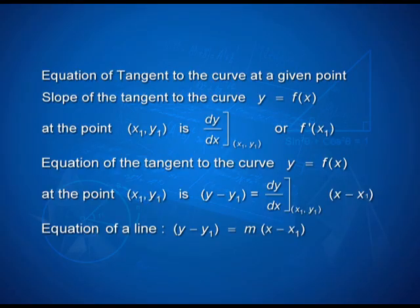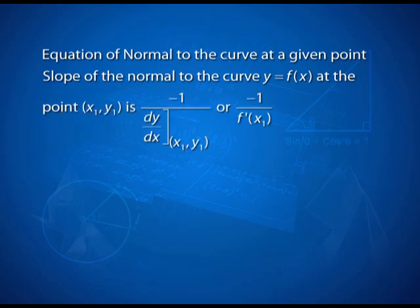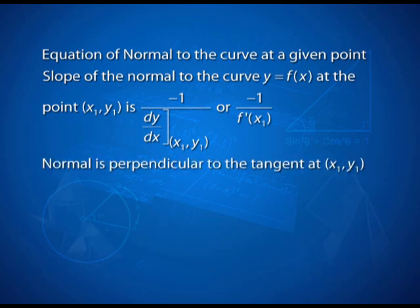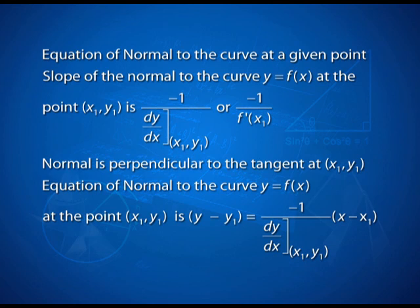Also, we have the equation of the normal to the curve at a given point. The slope of the normal at point (x₁, y₁) to the curve y = f(x) is given as −1 / (dy/dx)|_(x₁,y₁). Why? Because the normal is perpendicular to the tangent at the point of contact. Therefore, the equation of the normal to the curve is y − y₁ = [−1 / (dy/dx)|_(x₁,y₁)] · (x − x₁).